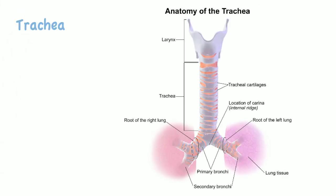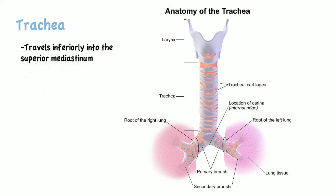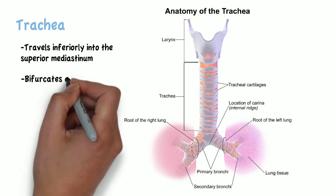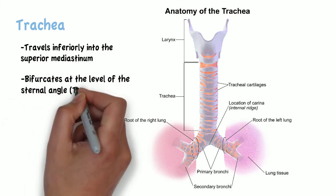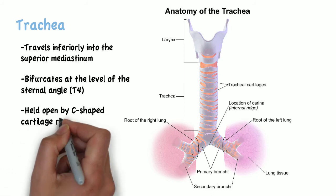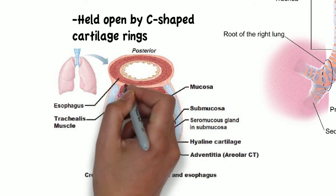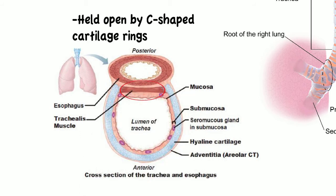The trachea is located just below the larynx and is the main airway to the lungs. It travels inferiorly into the superior mediastinum, bifurcating at the level of the sternal angle, or T4. This bifurcation is also called the carina. The trachea is held open by C-shaped cartilage rings, and the free ends of these rings are supported by the trachealis muscle.